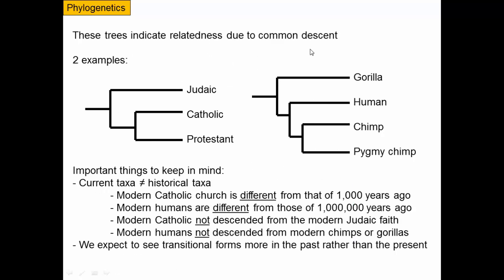These trees indicate relatedness due to common descent. Using a non-biological example: Judaism, Catholicism, and Protestantism as a phylogeny. An important point is that current taxa are not the same as historical taxa. Judaism today is very different from Judaism a couple thousand years ago; the Catholic Church today is very different from the Catholic Church 200 years ago. Similarly, in the biological diagram, what we label 'human' going back in time is not exactly the same as modern humans.